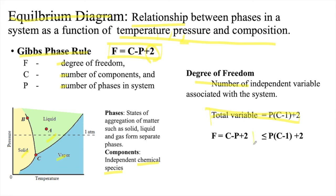So F is less than or equal to P times (C minus 1) plus 2.